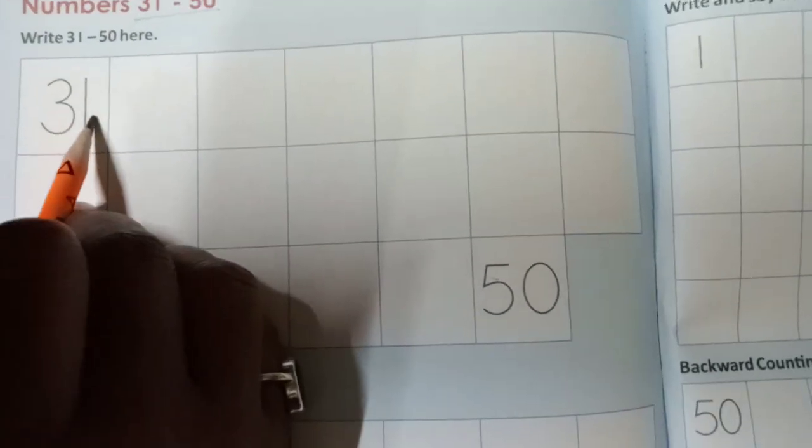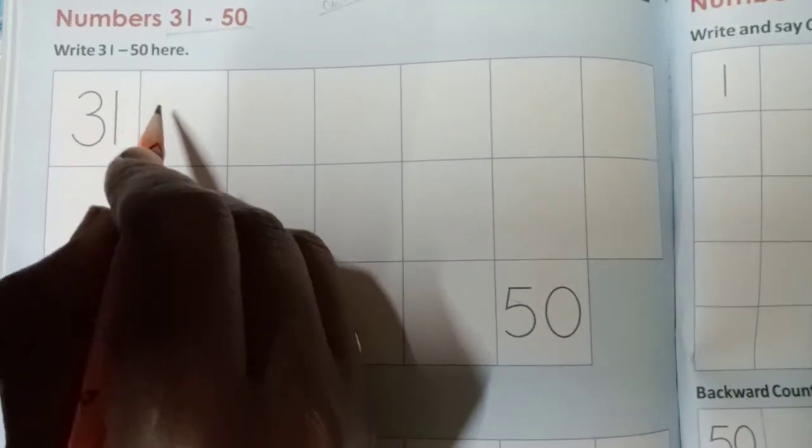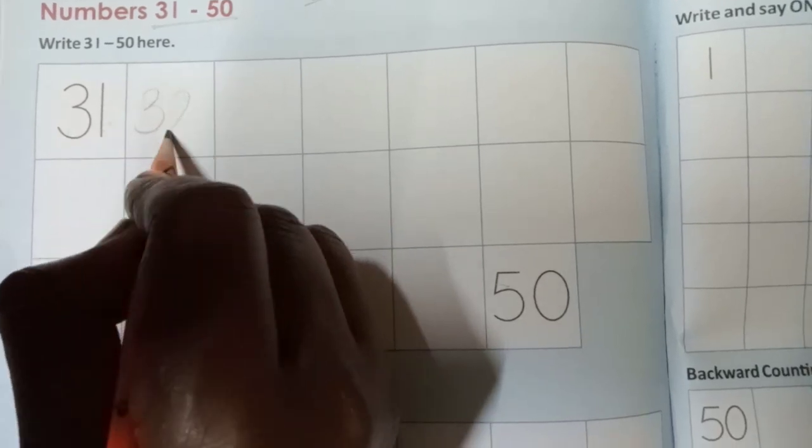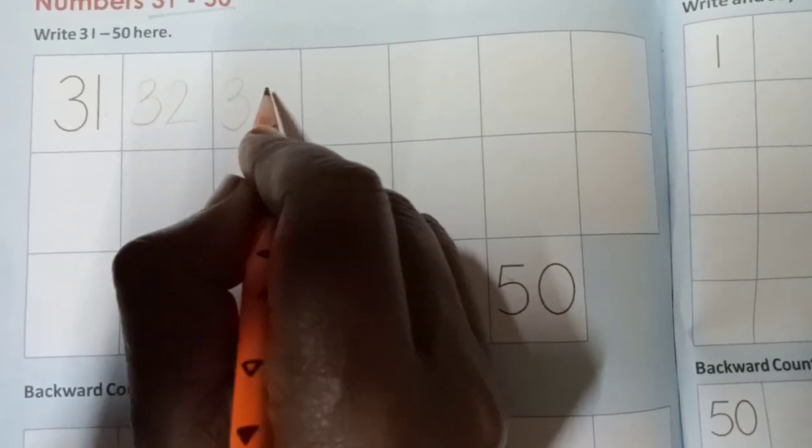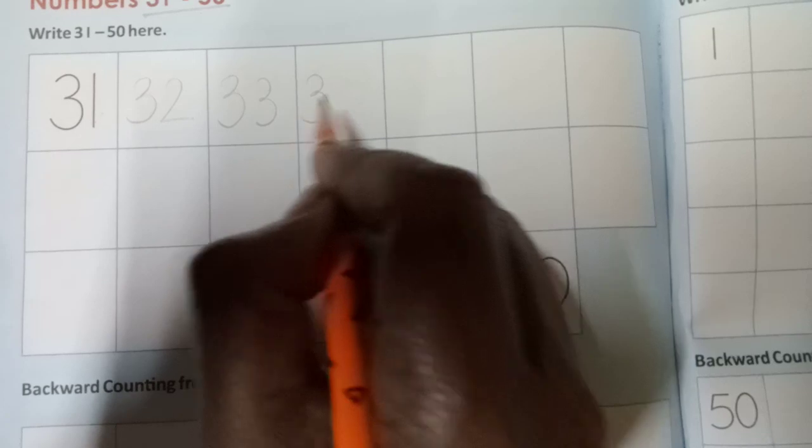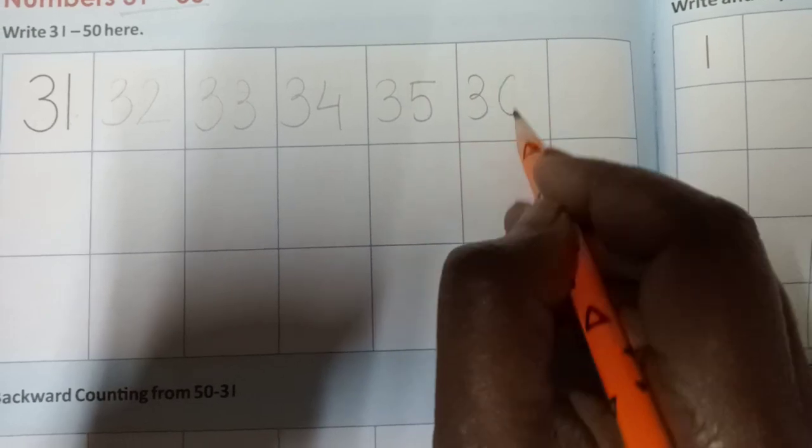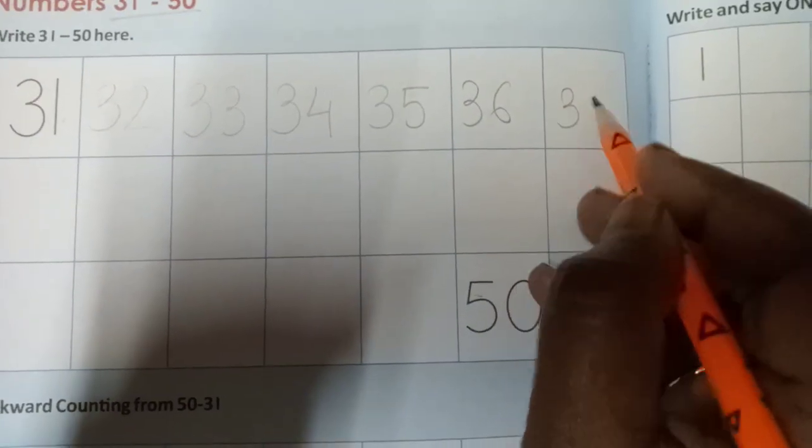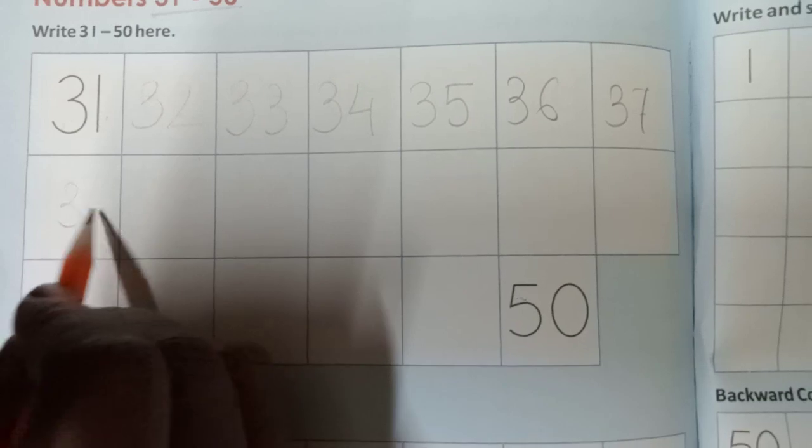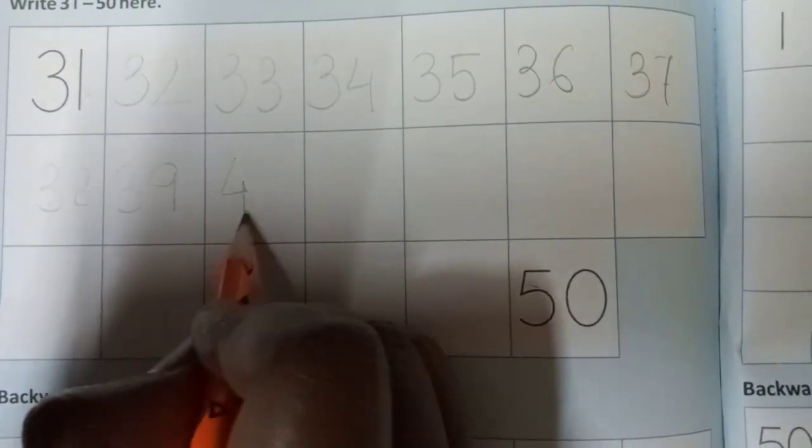So 31 is written here. After 31, it is 32, then 33, then 34, 35, 36, 37, 38, 39, 40.